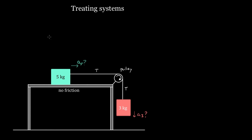We want to find acceleration, so we'll use Newton's second law: acceleration in a given direction equals the net force in that direction divided by the mass. Let's pick the five kilogram mass. The acceleration of the five kilogram mass equals the net force on the five kilogram mass divided by five kilograms. Since this box accelerates horizontally, we'll work in the x direction.